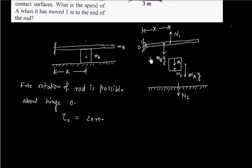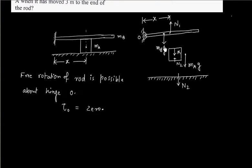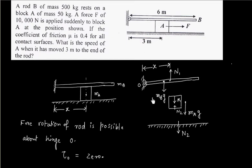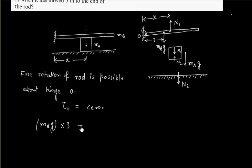So let us find net torque about O. That is one torque is due to weight MB into g. And this distance is, this is center of mass, that is 3 meters. This distance is given and this distance is equal to normal reaction into x.